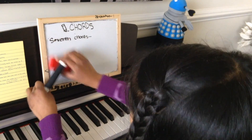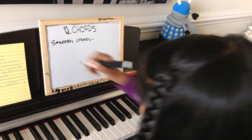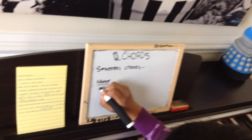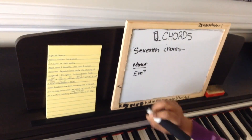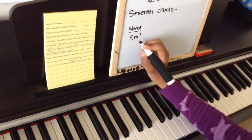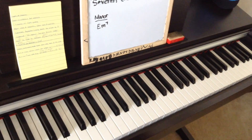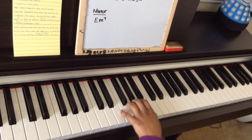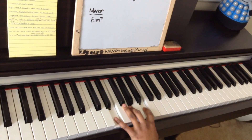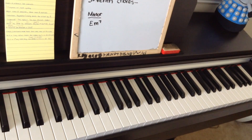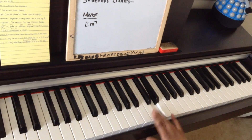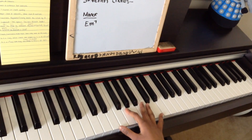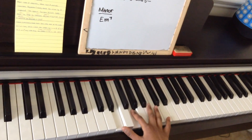Now let's go on to the minor seventh. Let's do E minor seventh. For E minor seven you play your E minor chord, and since it's a minor seventh you take the E minor scale. D is your seventh note. So your E minor seventh chord is E, G, B, D.